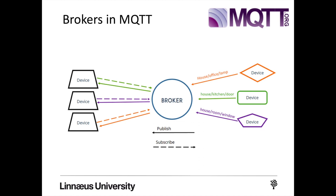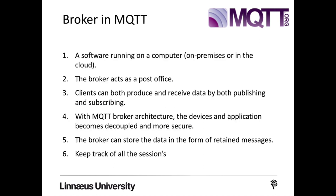Another important concept in MQTT is the broker. The broker is primarily responsible for receiving all messages, filtering the messages, deciding who is interested in them, and then publishing the message to all subscribed clients. The broker works like a post office, where multiple clients or devices send messages — we can think of messages as letters — and the broker sends those letters to the designated clients or devices. A broker is a software running on a computer, or it can also be a cloud application.